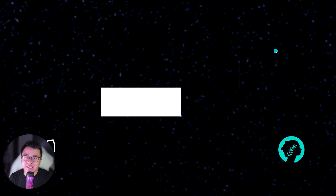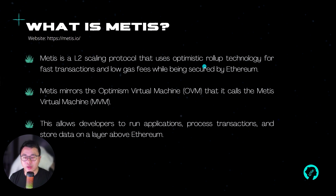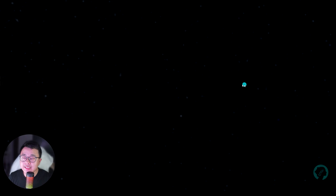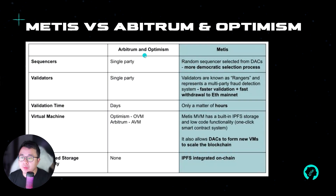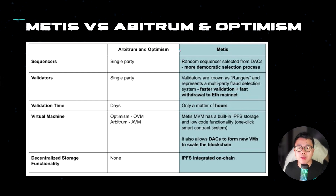So what is MATIS? MATIS is essentially a Layer 2 on the Ethereum blockchain and it's an Optimism fork. A lot of the features follow Optimism, whereby you have fast transactions and low gas fees while security is maintained by the Ethereum network. Instead of calling it an Optimism Virtual Machine, they have their own version called the MATIS Virtual Machine. For Arbitrum and Optimism, the sequencers and validators are single party, whereas for MATIS it uses random sequencer selection, so it's more decentralized and more democratic, although Arbitrum and Optimism will slowly become more decentralized.